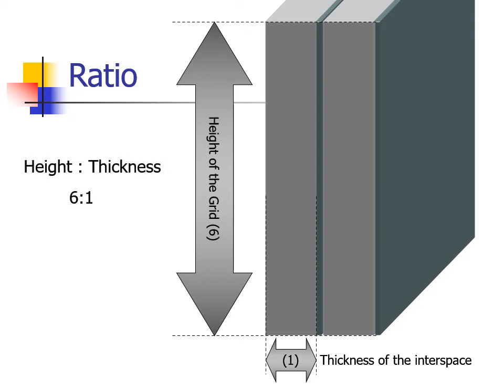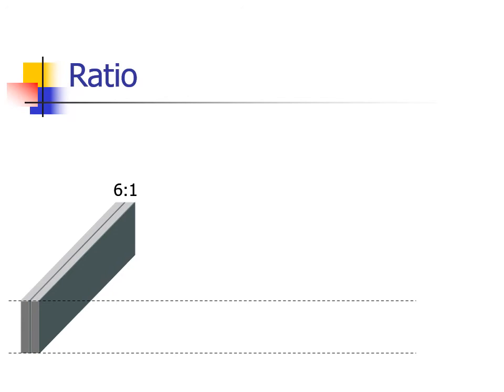Grid ratio is commonly expressed in units of height compared to interspace thickness, and the interspace thickness is always expressed as one. So, a six-to-one grid will always be six times higher than the thickness of the interspace material. Here we have an example of a six-to-one grid. Let's draw some guidelines tangent to the top and bottom of our six-to-one grid.